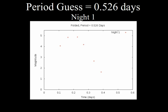Now, just for illustration purposes, with that 0.526 days, there's that night 1 data. Here's the night 2 data. And then 3, 4, and 5. And if I color code them and put them all on top of each other again,